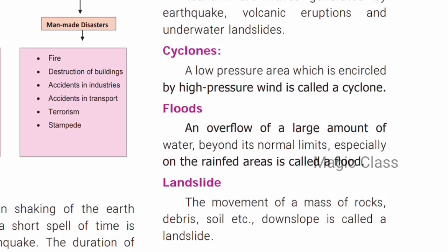Cyclones form in low pressure areas surrounded by high pressure winds. Next is floods. A flood is an overflow of a large amount of water beyond its normal limits.